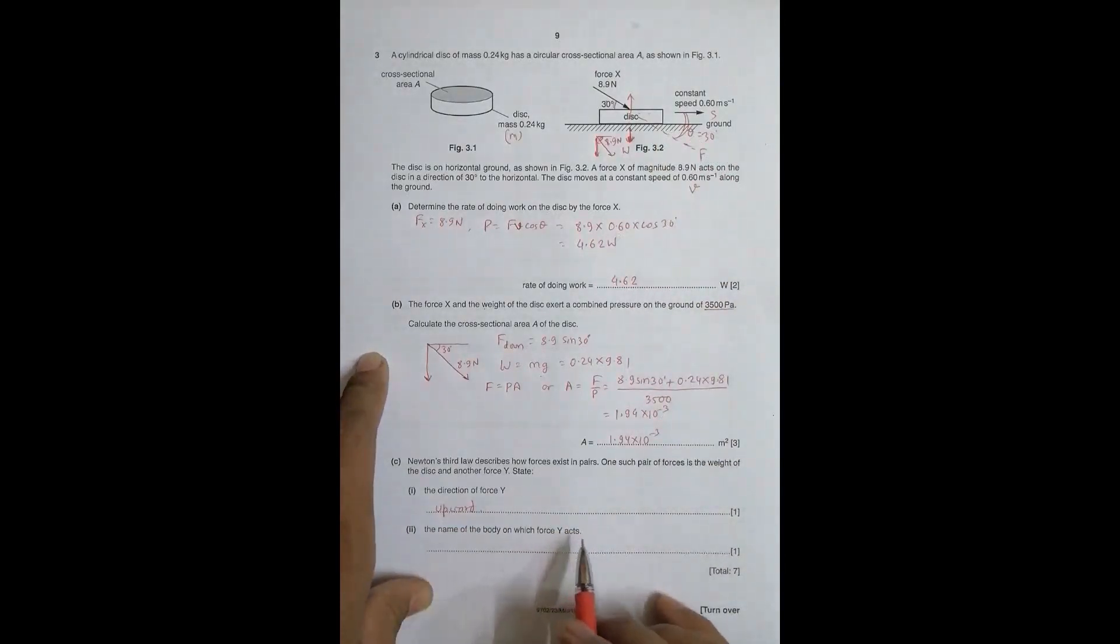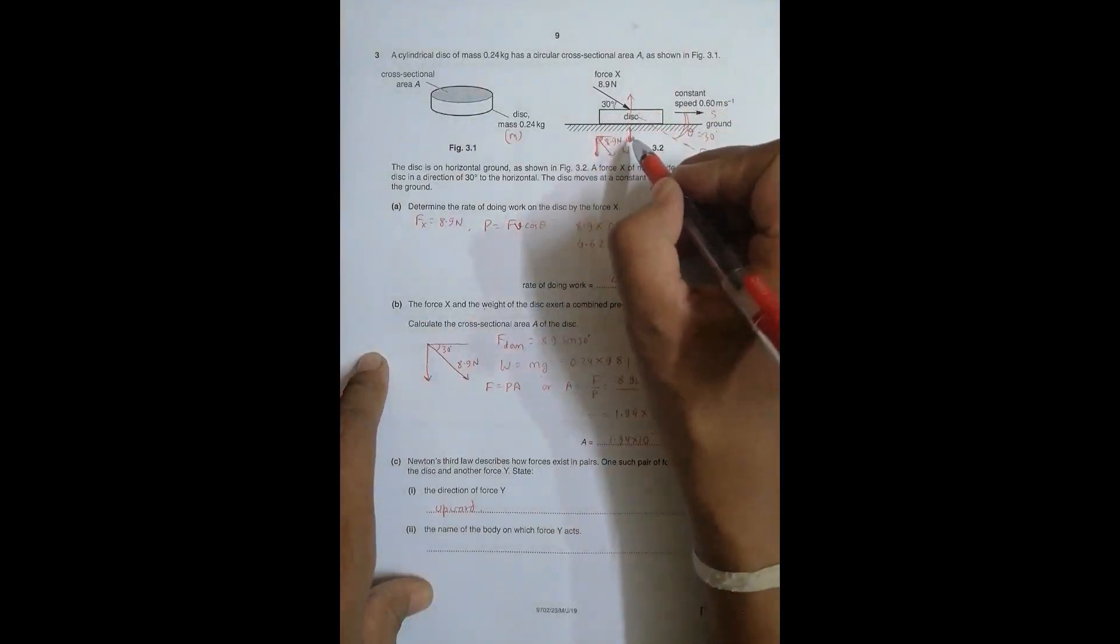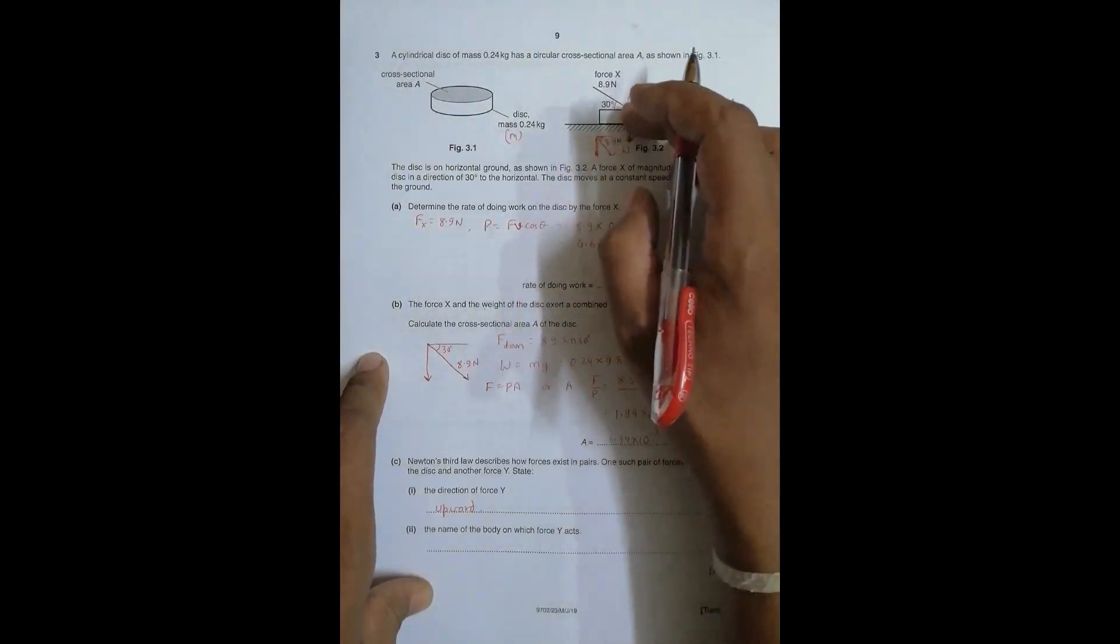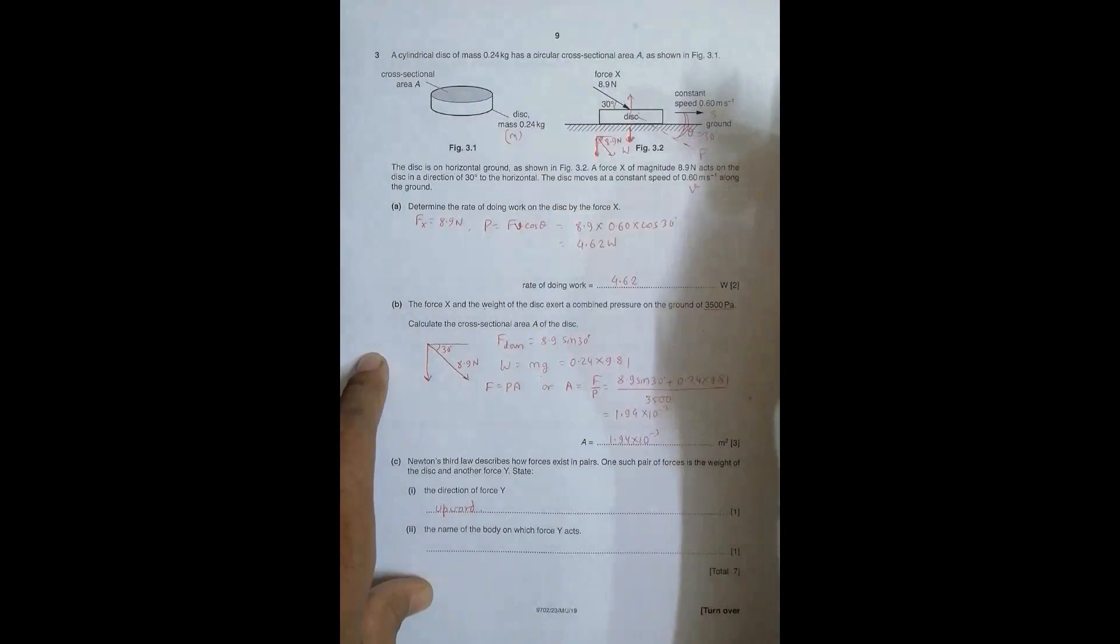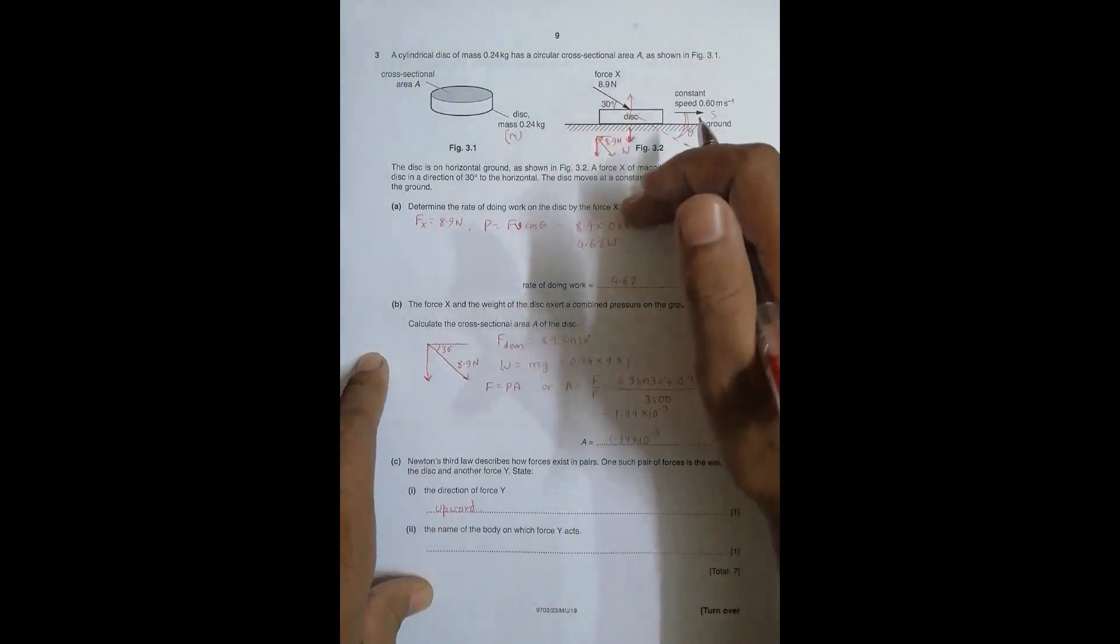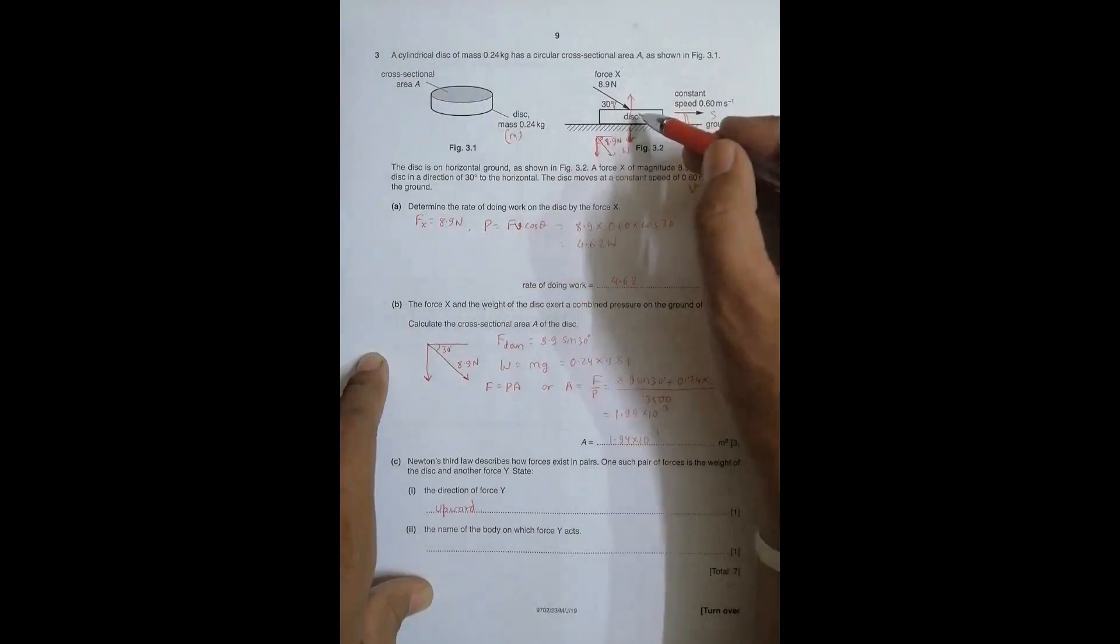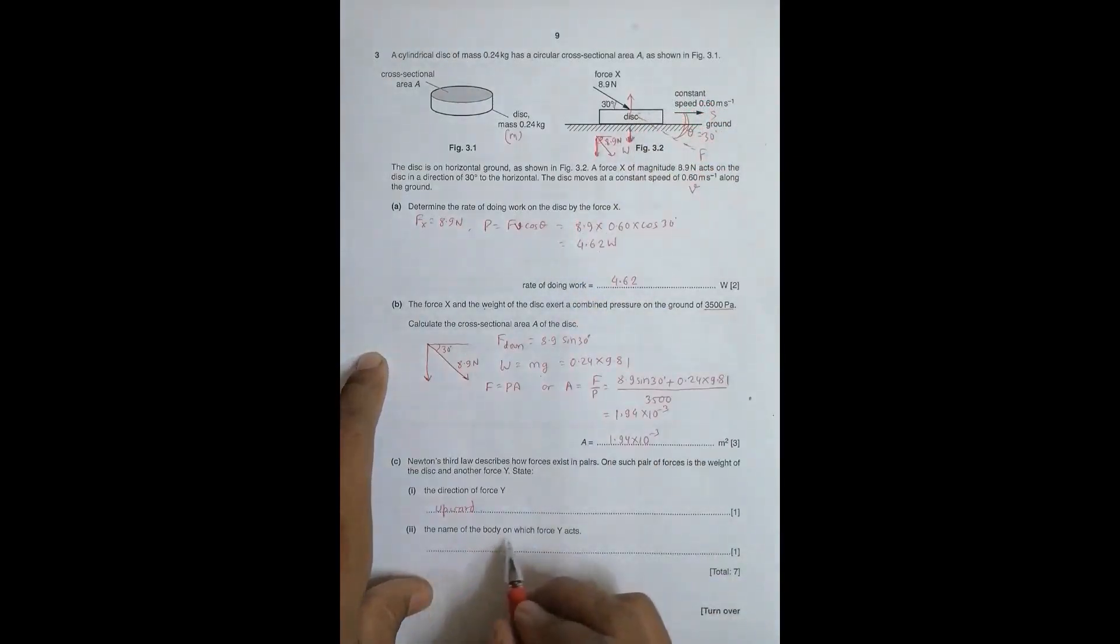Then the name of the body on which force Y acts - W is acted by Earth on this body, so the reaction force should be acted by this body on Earth. Let me repeat: the weight is the force acted by Earth on this body, so the other force should be the force acted by this body on Earth. The body on which force Y acts is the Earth. This is the final answer.